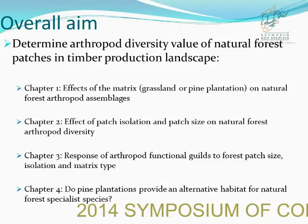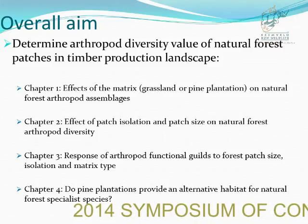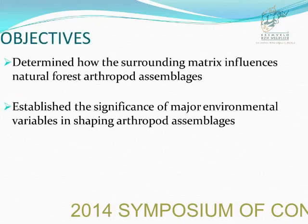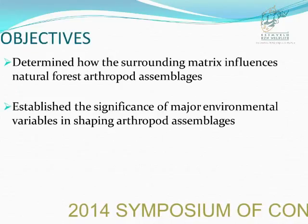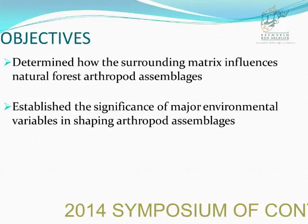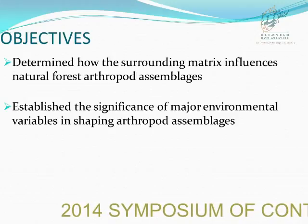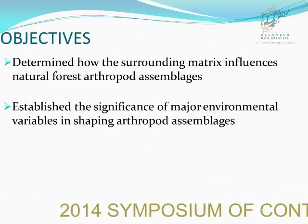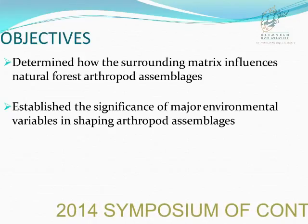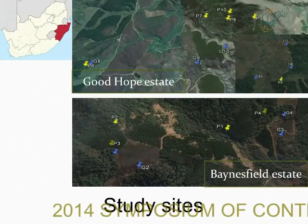The focus of today's talk is on the first chapter: the effect of the matrix on natural forest arthropod assemblages. The objectives are to determine how the surrounding matrix influences natural forest assemblages, and to establish the significance of major environmental variables in shaping arthropod assemblages.